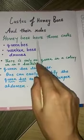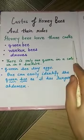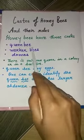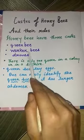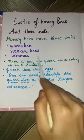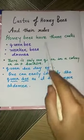Honeybees have three castes: queen bee, worker bees, and drones.